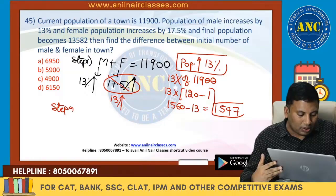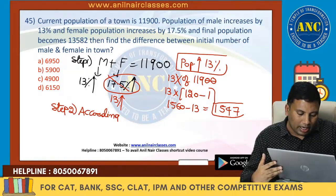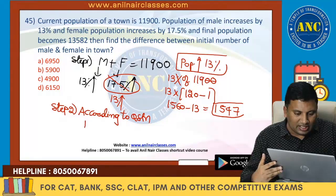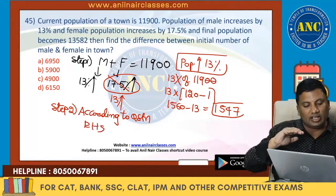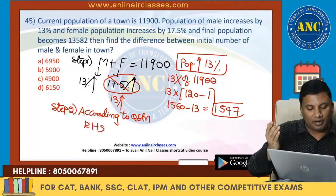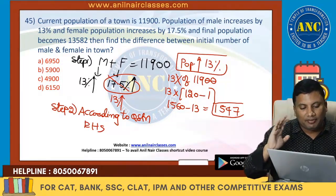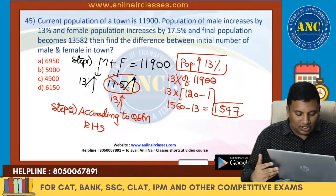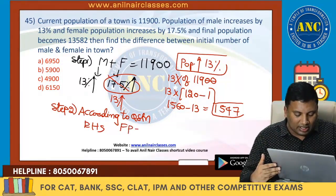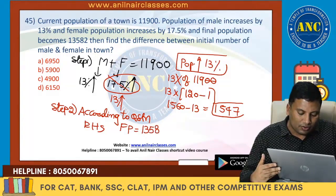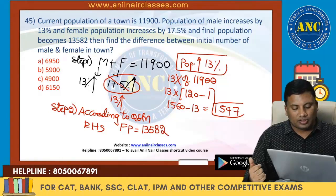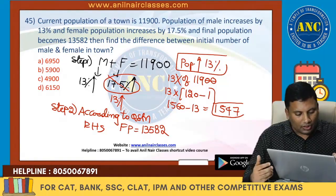Step 2: According to the question, male population increases by 13% and female by 17.5%. The final population is 13,582. So from 11,900, the population became 13,582.